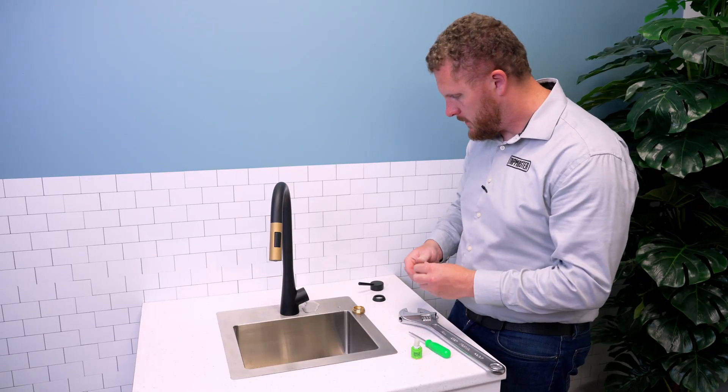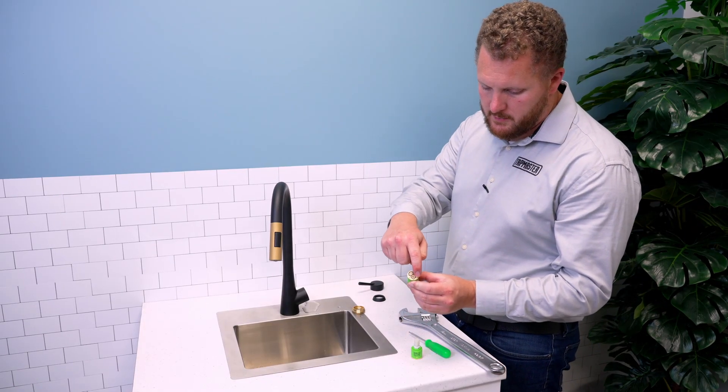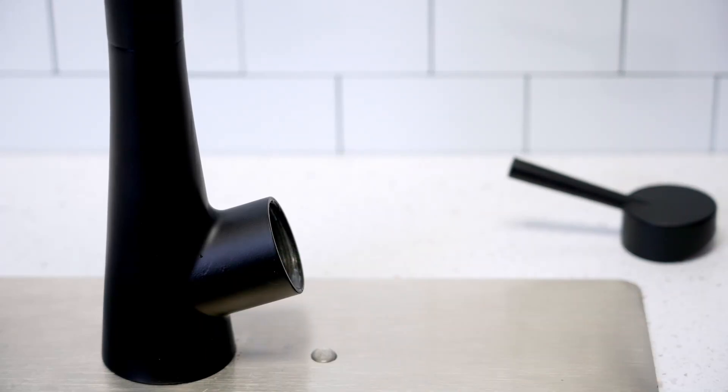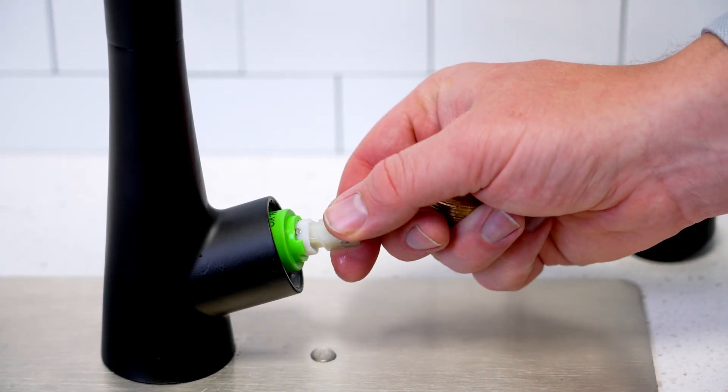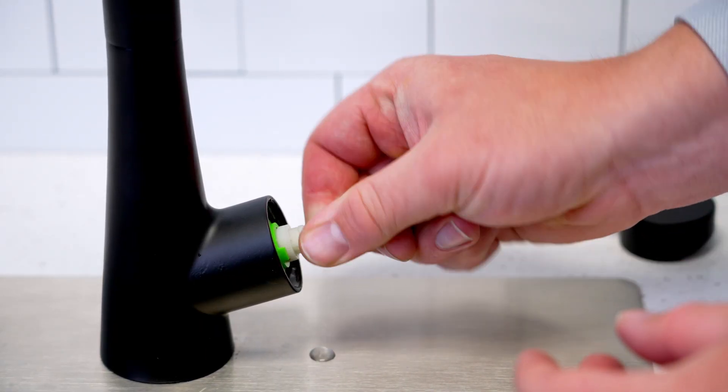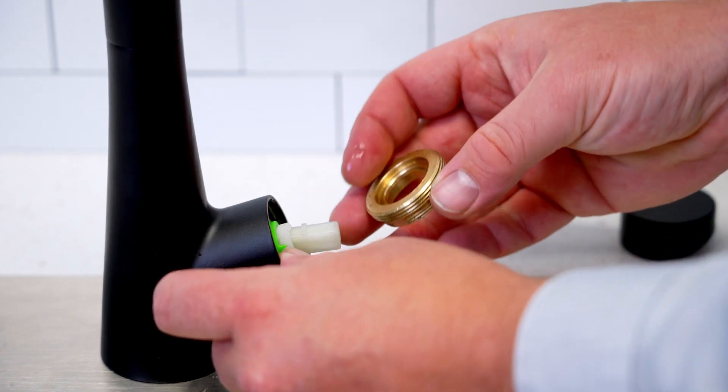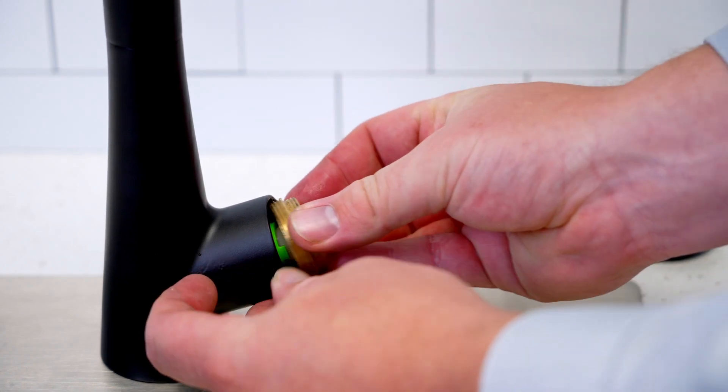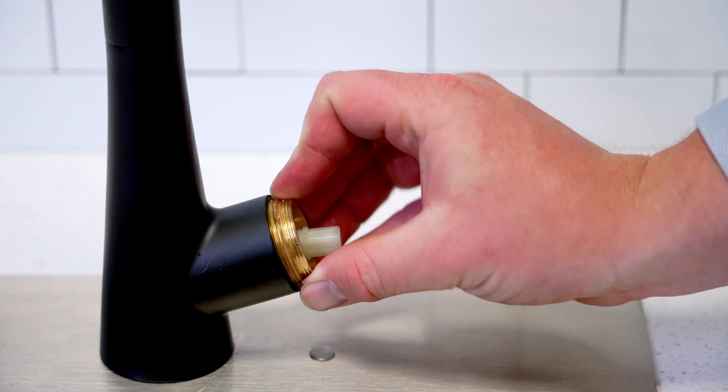Take your new faucet cartridge. There will be two little alignment pins. You can align that in there. Put the brass nut back in place. Make sure it's nice and centered as it threads on.